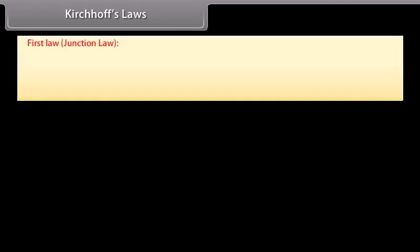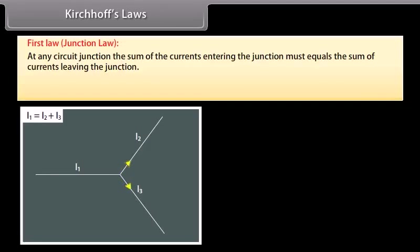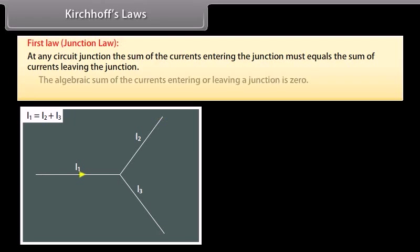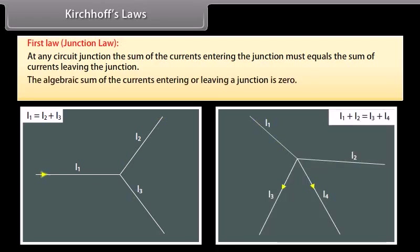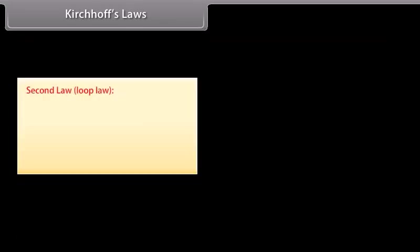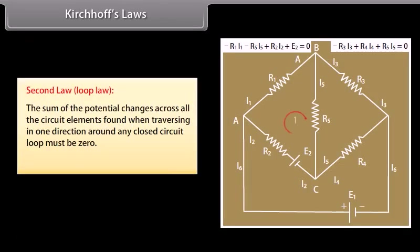Kirchhoff's First Law states that at any circuit junction, the sum of the currents entering the junction must equal the sum of the currents leaving — the algebraic sum of currents is zero (ΣI = 0). Kirchhoff's Second Law states that the sum of potential changes across all circuit elements when traversing in one direction around any closed loop must be zero (ΣΔV = 0).